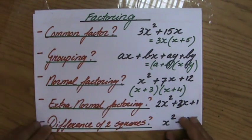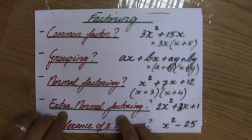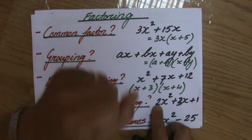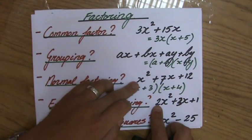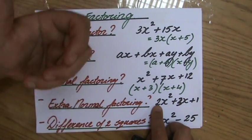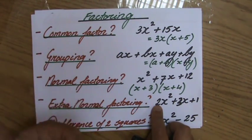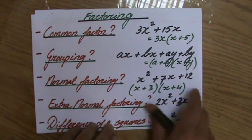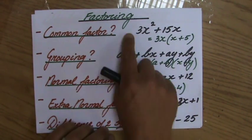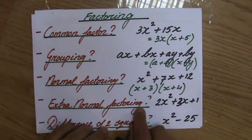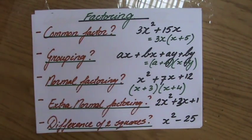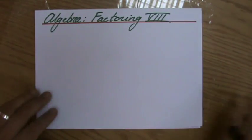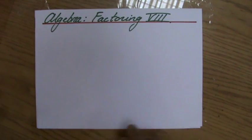What is the difference between extra normal factoring and normal factoring? It's that the coefficient of your x squared is not a 1 — it's a 2, a 3, or a minus 7, or whatever it is, it's not a 1. And you can't get rid of that coefficient by taking out a common factor. So this is what I call extra normal factoring — it's not an official term. You just have to do one thing extra.